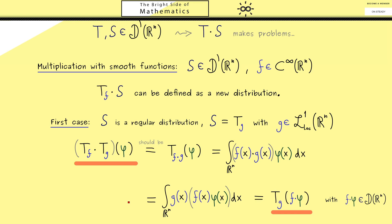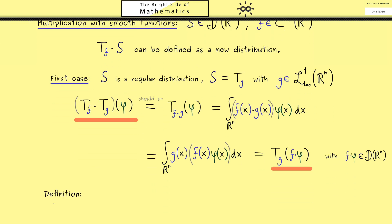Therefore this integral is then the distribution tg applied to the test function f times phi. Comparing the right-hand side to the original left-hand side, we see that the multiplication tells us we have to push this function f into the argument. This rule also makes sense when the distribution s is not a regular one — hence this will now be our definition for the multiplication, as a natural extension of the integral representation.